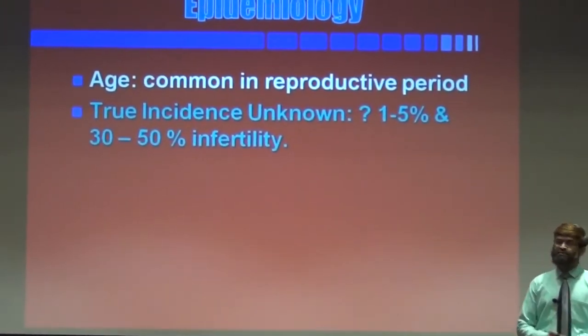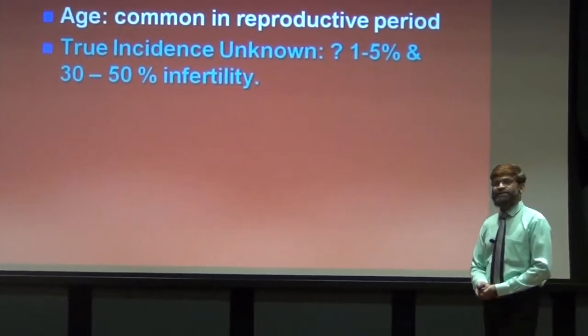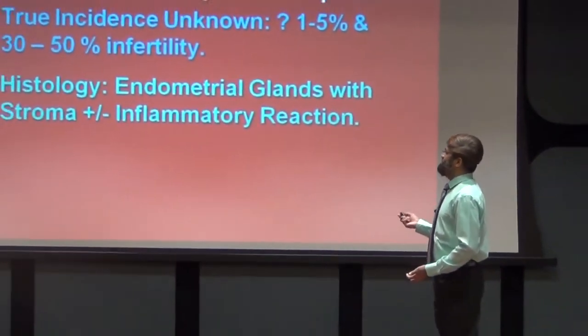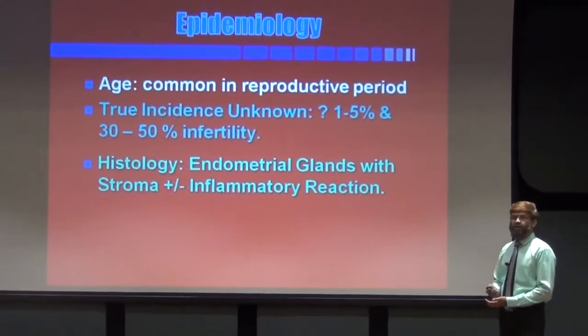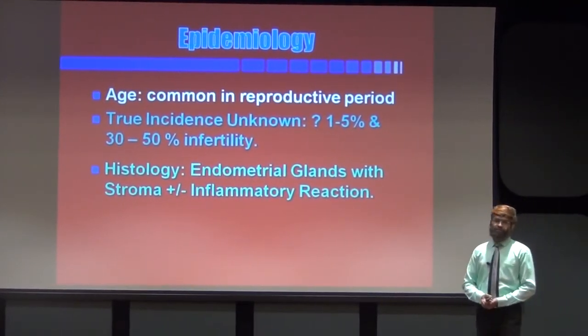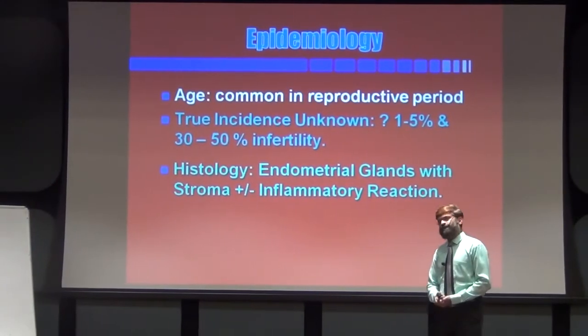The notable point is that 30 to 50 percent of females land up with infertility. So we can say infertility leads to endometriosis, or endometriosis is the cause for infertility. Histologically, endometrial glands are seen with stroma, where there may or may not be association of inflammatory reaction. If pelvic inflammatory diseases are present, there may be chances of endometriosis.